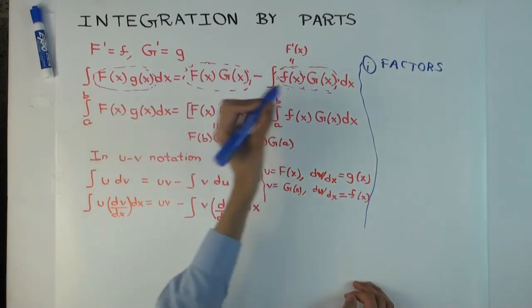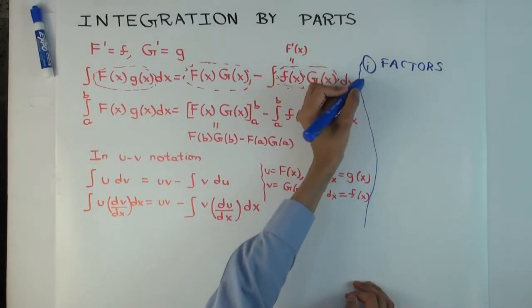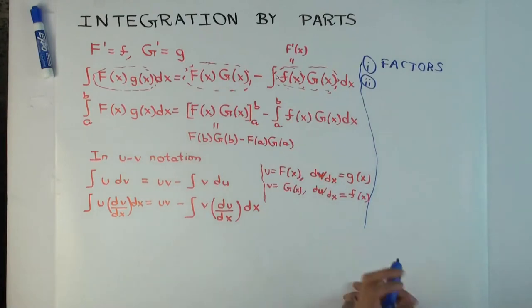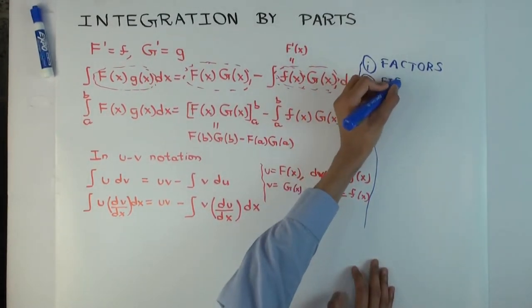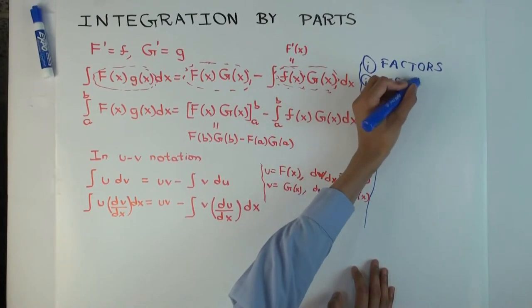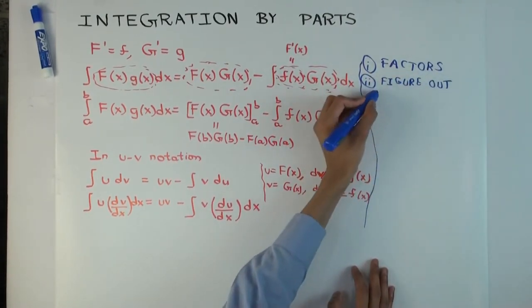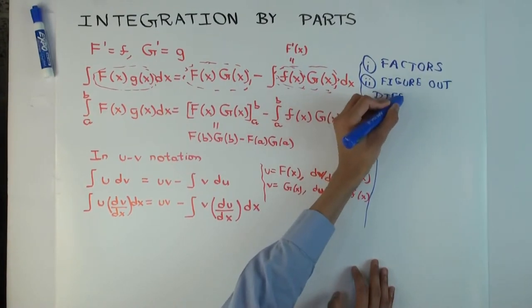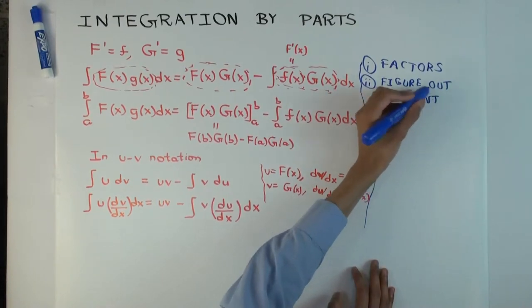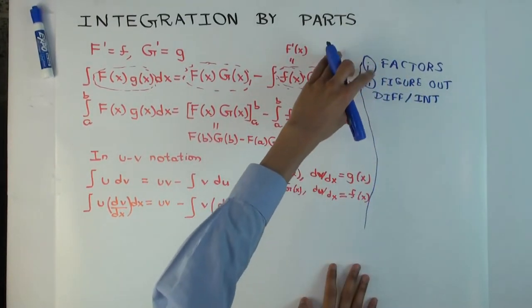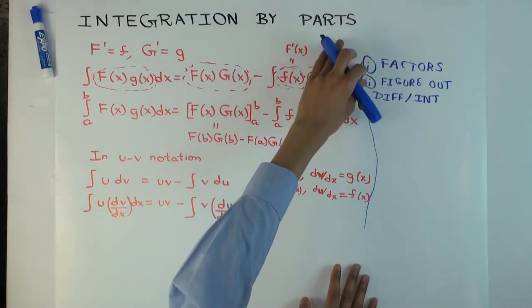What would step two be? Once you've identified the factors, what do you need to do next? You have to integrate the small g, the little g. Well, yeah. But there's a little thing you have to do before. You have to figure out which factor to integrate and which one to differentiate. You have to figure out. I thought that's step one. Well, yeah. You could make it part of step one. I just wrote it differently, like in two separate steps. Figure out which part to differentiate, which part to integrate. We'll do a full example with this in a subsequent video. Okay? You can think of it as sort of the same thing. But these two steps, you can think of them as together.